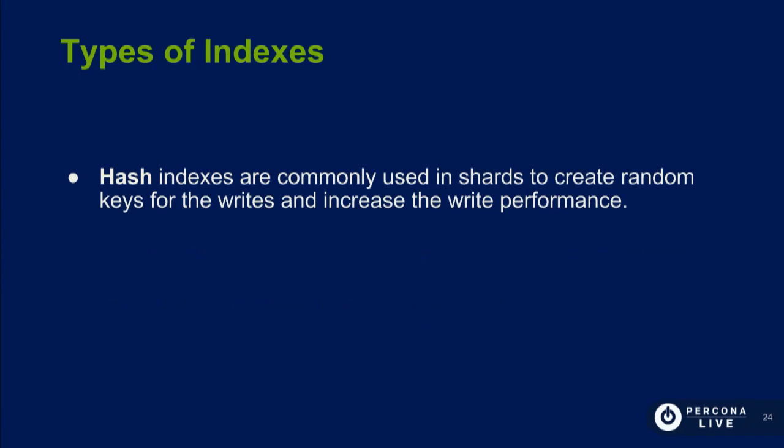Hash indexes are commonly used in sharding. They are almost useless for queries, but they're used to split writes between shards — creating a hash for a kind of random write to a specific shard rather than a round-robin approach.